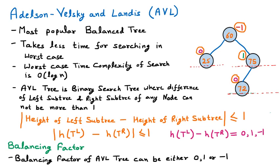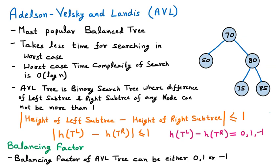Now taking one more example to give more clarity about the AVL tree. We have another tree and need to determine whether it is an AVL tree or not. Again, rule number 1: all leaf nodes have a balancing factor of 0. A leaf node is a node with no children. All three leaf nodes are assigned a balancing factor of 0. Going from bottom to top, we now look at node 80.